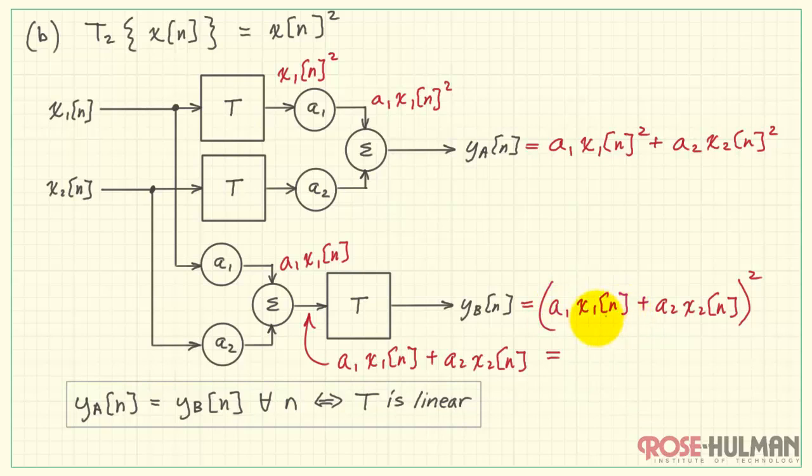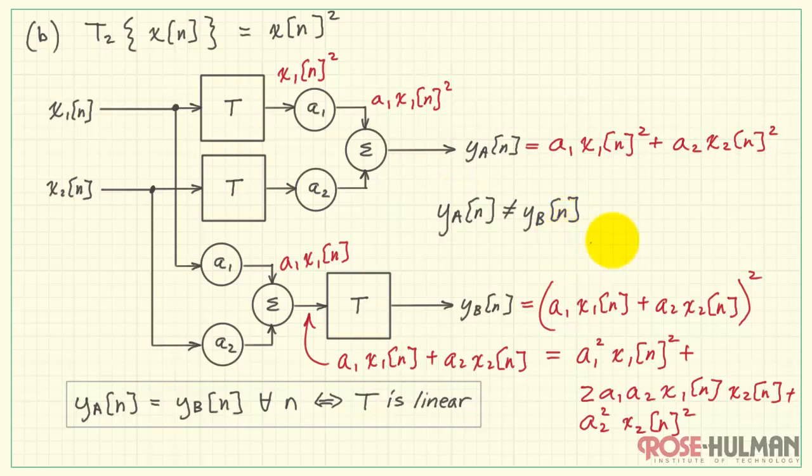I'm going to multiply out. We have A1 times X1 times itself, and I'm going to insert a squared on X1 here shortly. There we go. We see that we have really a number of cross products being generated here. Therefore, YA is not equal to YB. T2, in this case, is not linear.